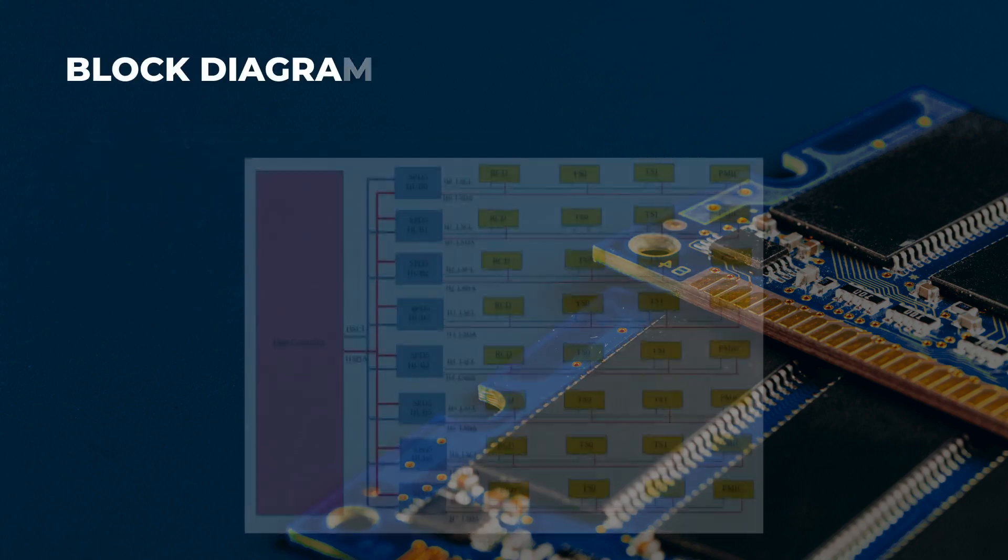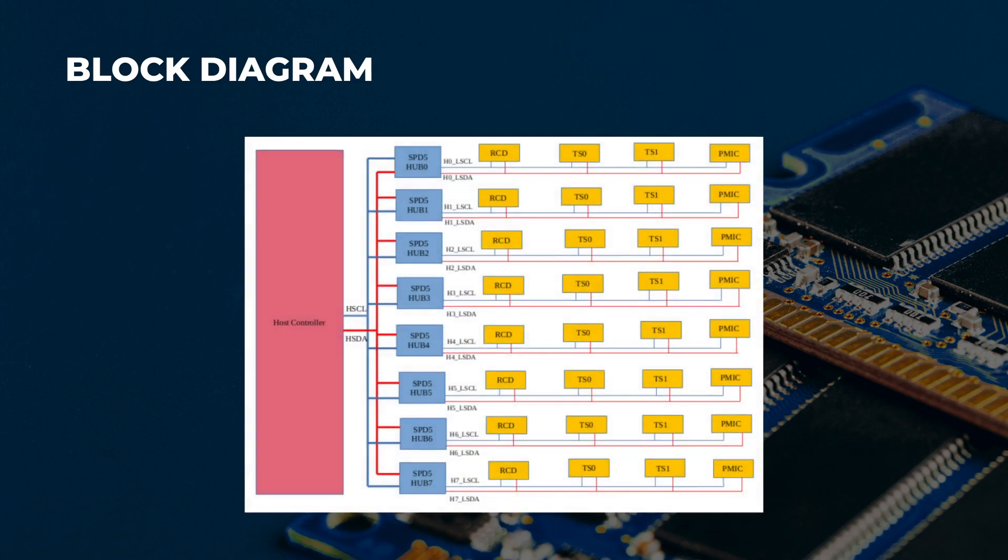Block diagram. There are up to 8 SPD5 hub devices on the I3C basic bus, and up to 13 local devices behind each SPD5 hub.